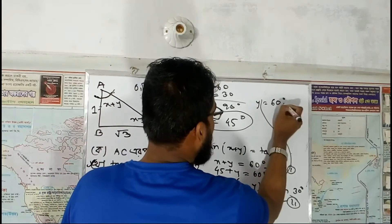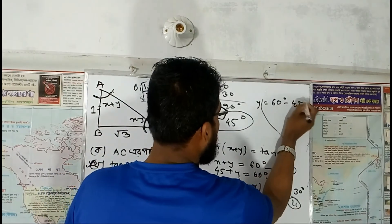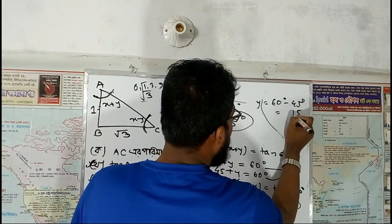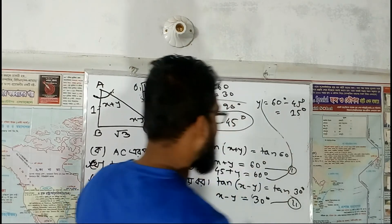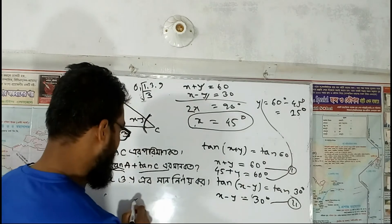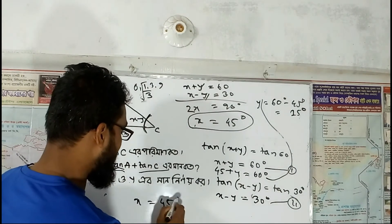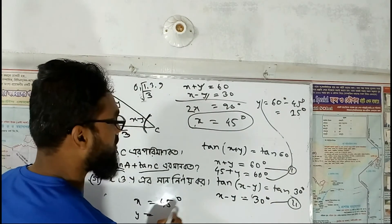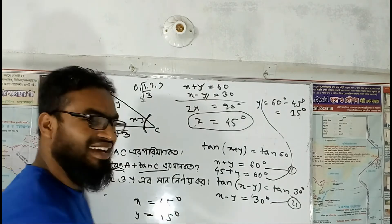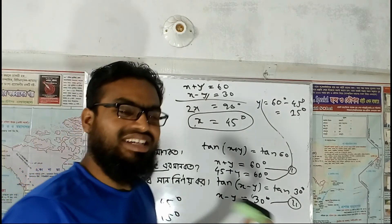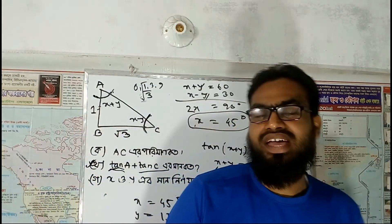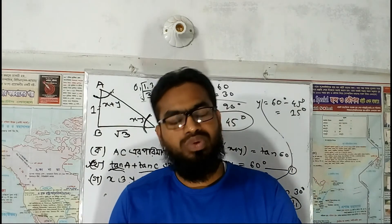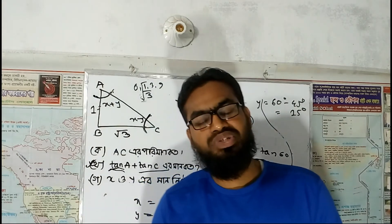60 degrees minus 45 degrees means 15 degrees. Or x is equal to 45 degrees, or y is equal to 5 degrees. Yes, that is the first step.